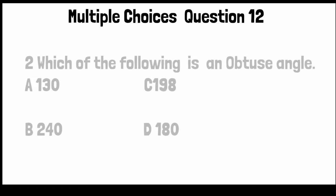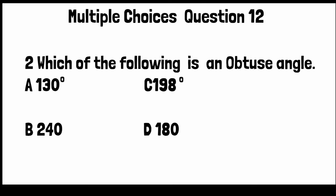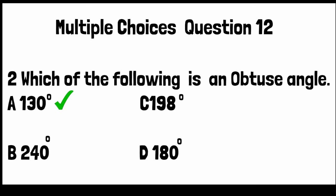Question number 2. Which of the following is an obtuse angle? Option A: 130 degrees, Option B: 240, Option C: 198 degrees, and Option D: 180 degrees. An obtuse angle is greater than 90 degrees and less than 180 degrees. So 130 degrees is obtuse. Option C and Option B are reflex angles. Option D is a straight angle. So the right option is A.